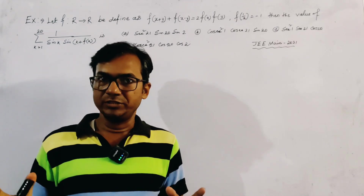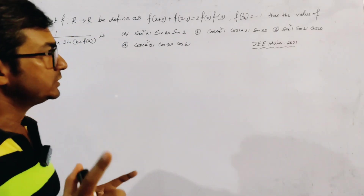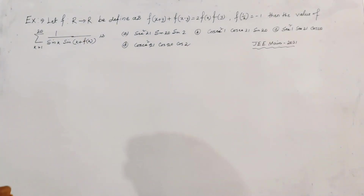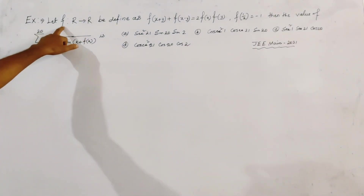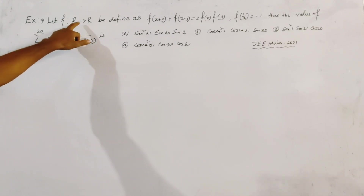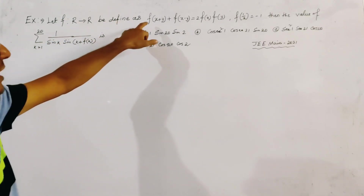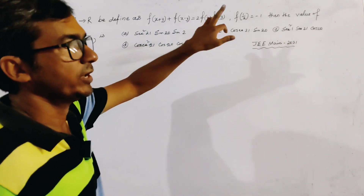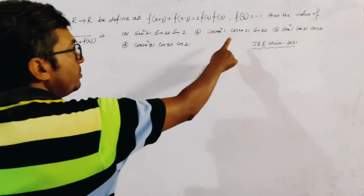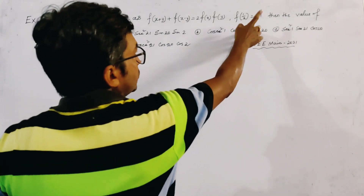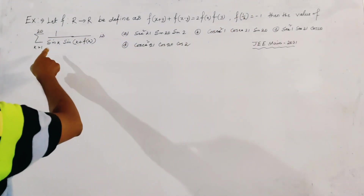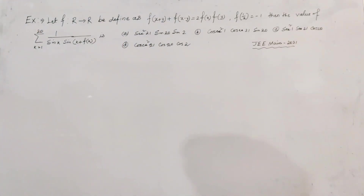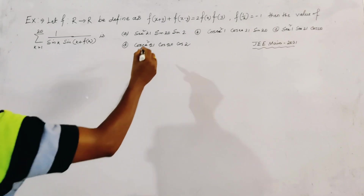This problem is from Trigonometry, also from JEE Main 2021. The problem is: let f map R to R be a function defined as f(x+y) + f(x-y) = 2·f(x)·f(y). It is also given that f(1/2) = -1. We need to find the value of the given expression from the four options.